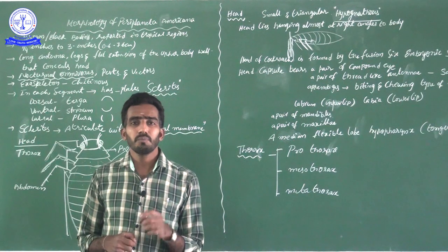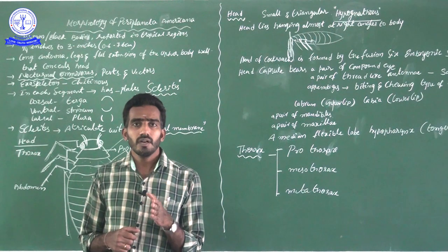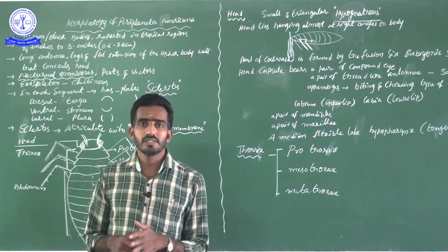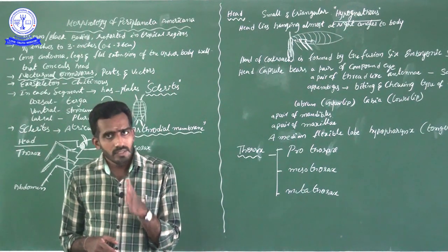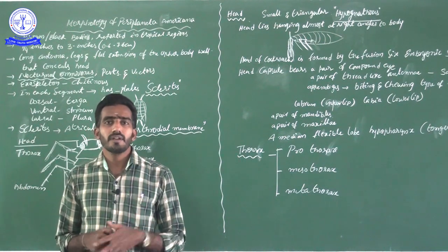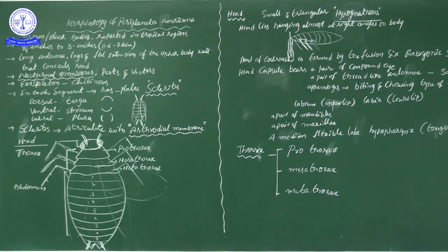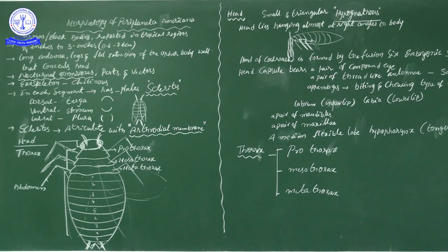The scientific name of the cockroach is Periplaneta americana. It is one of several species, and in our 12th standard we discuss the type study of Periplaneta americana. The name 'americana' is significant — it was first found in North America, which is why it was given that name.